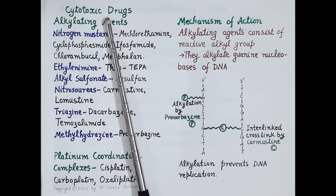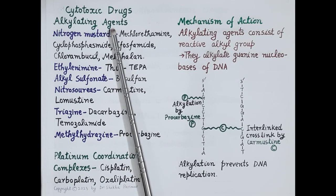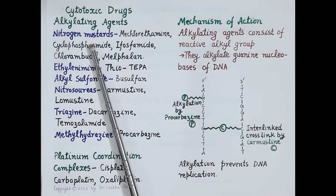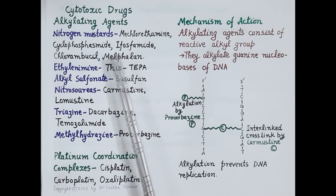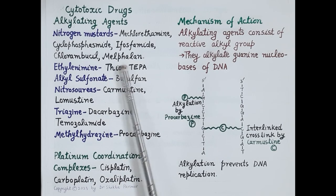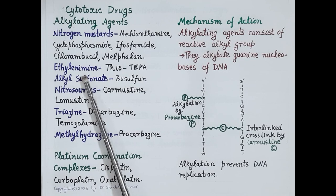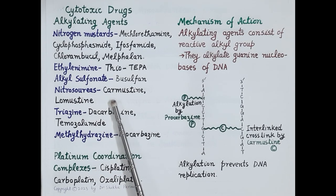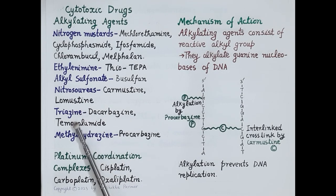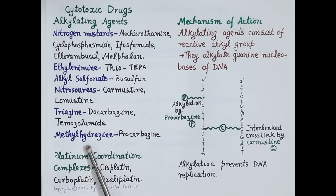Another category of cytotoxic drugs are the alkylating agents, classified into 6 main classes: nitrogen mustards (mechlorethamine, cyclophosphamide, ifosfamide, chlorambucil, melphalan), ethylenimines (thiotepa), alkylsulfonates (busulfan), nitrosoureas (carmustine and lomustine), triazines (dacarbazine and temozolomide), and methylhydrazines (procarbazine).